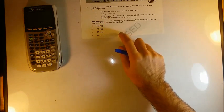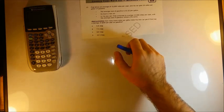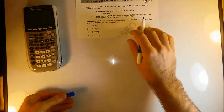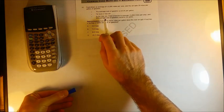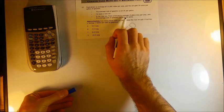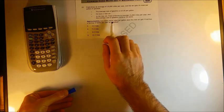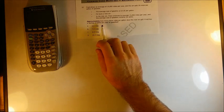Problem 10. Fred drives an average of 15,000 miles per year, and his car gets 20 miles per gallon of gasoline. The average cost of gasoline is $3.25 per gallon. He buys a new car. In his new car, Fred continues to average 15,000 miles per year, and the average cost of gasoline remains the same. Approximately how many more miles per gallon does the new car get if Fred has a savings of $650 per year on gasoline?